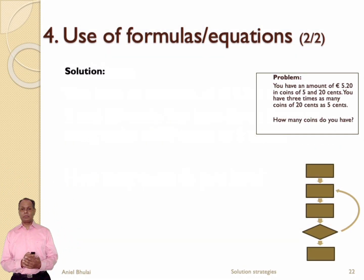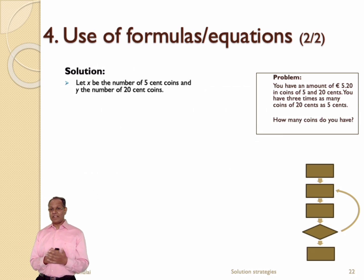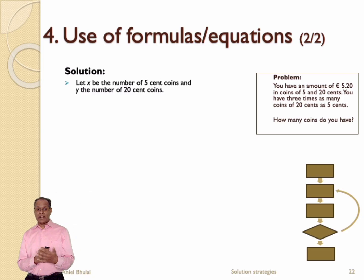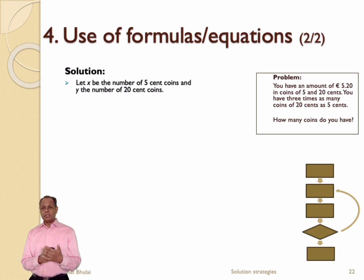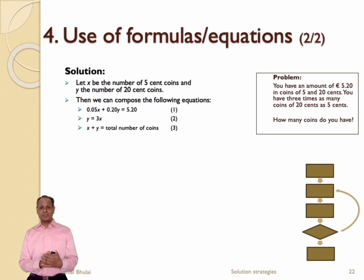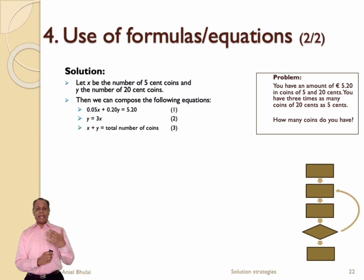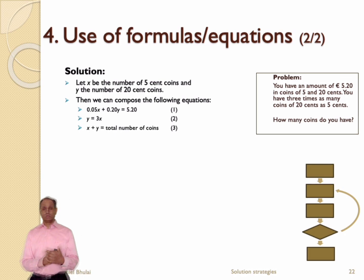I hope you have been able to solve this problem with the formulas and equations solution strategy. Now let's discuss how you should have solved this problem. First, we define x, which is the number of 5 cent coins. And we define y, which is the number of 20 cent coins. Equation 1 represents the amount of money in 5 and 20 cent coins. Equation 2 says that we have 3 times as many coins of 20 cents as 5 cents. And equation 3 represents the total number of coins. What we have in fact done now is formalized the problem by equations.